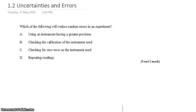David Kahn here with another question in Topic 1.2. This is Uncertainties and Errors, and we're looking at random errors and systematic errors. We want to know which of the following things we could do would reduce random error in an experiment.